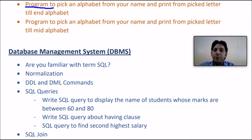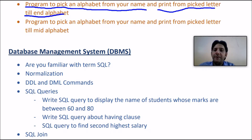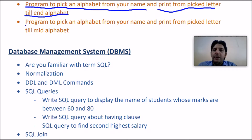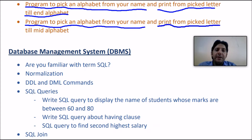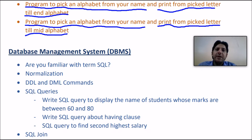Another program: pick an alphabet from your name and print from the picked letter till the end of the alphabet. They will give you a string as your name, you pick a letter, and print from that letter to the end. Similarly, pick an alphabet from your name and print from the picked letter till the middle of the name. These two programs are related to finding substrings from your name.